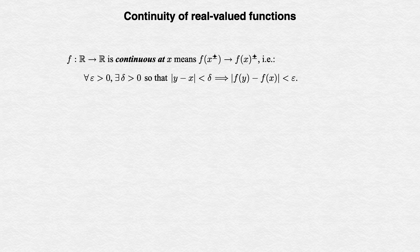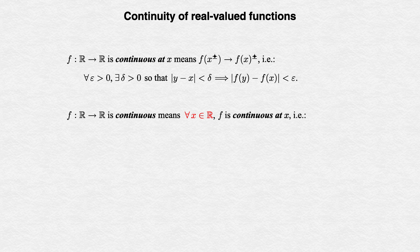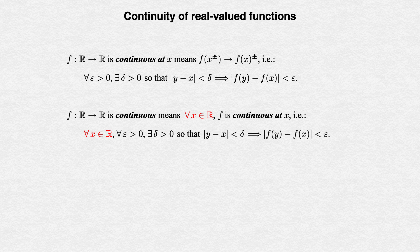One more definition before we finish this introduction. What it means for f to be continuous is that f is continuous at each of the points of its domain. In other words, for all x in ℝ, for all epsilon greater than zero, there exists delta greater than zero, so that |y − x| < delta implies |f(y) − f(x)| < epsilon. That's a for-all, for-all, there-exists, implies definition — quite a mouthful. Our language of open balls and open sets will let us trim this down to an extremely tidy statement, so let's move on to continuity of functions in metric spaces to watch the magic happen.